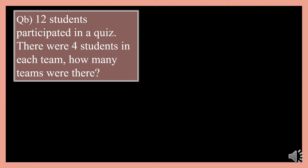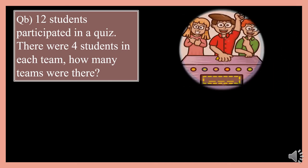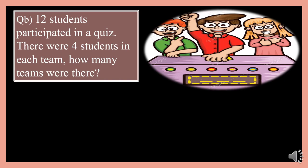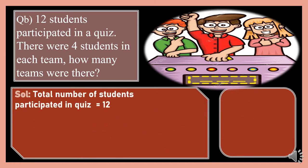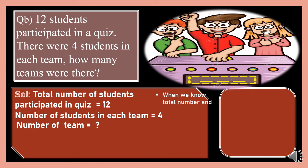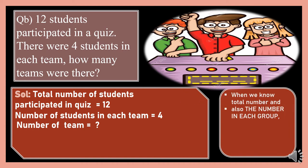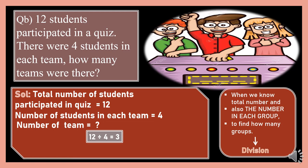Let's see the next example. 12 students participated in a quiz. There were 4 students in each team. How many teams were there? What is given? Total number of students is 12. Number of students in each team is 4. We need to find the number of teams. Total number is given and the number in each group is given, so to find how many groups, we divide. 12 divided by 4: in the 4 times table, 4 threes are 12, so the answer is 3. There were 3 teams participating in the quiz.